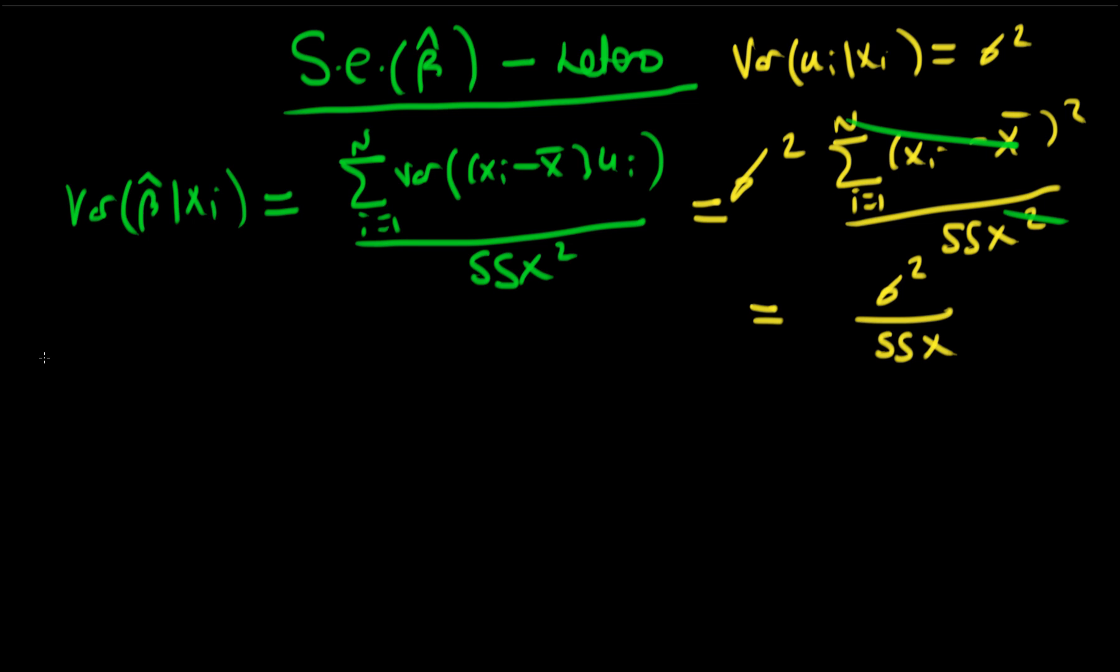So what does it mean to have heteroscedastic errors? Well, it means that the variance of our error term ui given xi now depends on xi. So instead of being some constant sigma squared, it's sigma i squared, where the i subscript here indicates that the error variance depends actually on the particular value of x which we're considering.